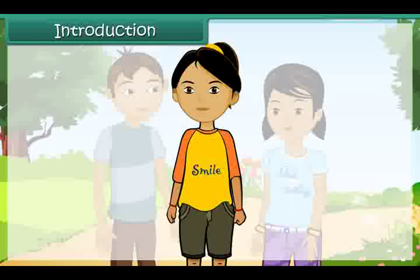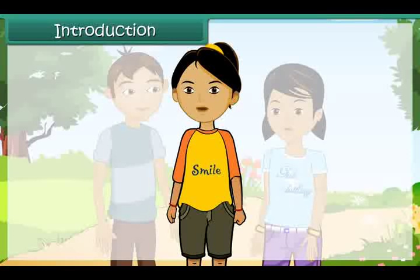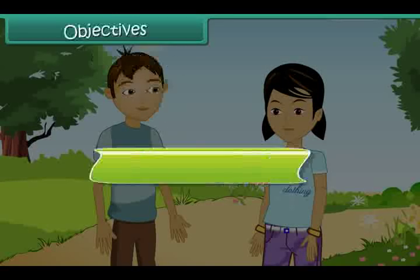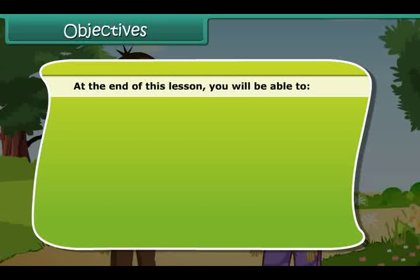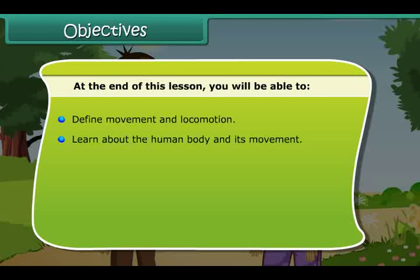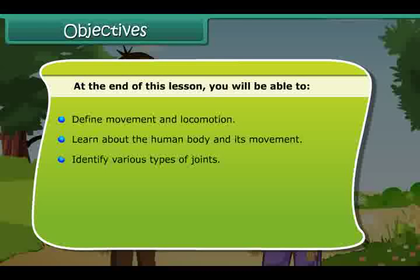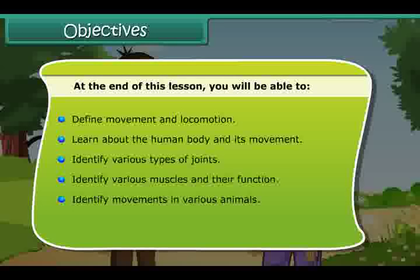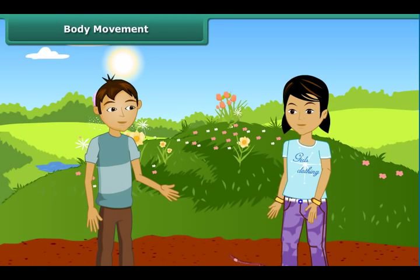Children, in this lesson, we will learn about body movement and the difference between movement and locomotion. At the end of this lesson, you will be able to: define movement and locomotion, learn about the human body and its movement, identify various types of joints, identify various muscles and their function, and identify movements in various animals.